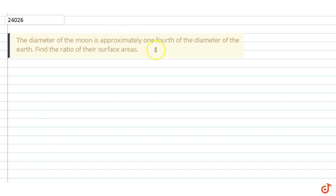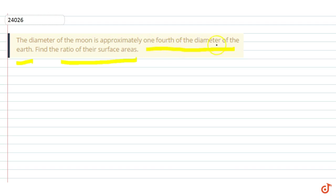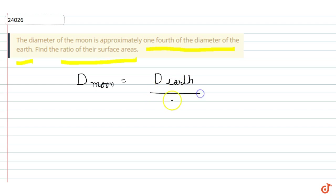The diameter of the moon is approximately one-fourth of the diameter of the earth. Find the ratio of their surface areas. We have given that the diameter of the moon is equal to one-fourth of the diameter of the earth, so diameter of moon equals diameter of earth divided by four.